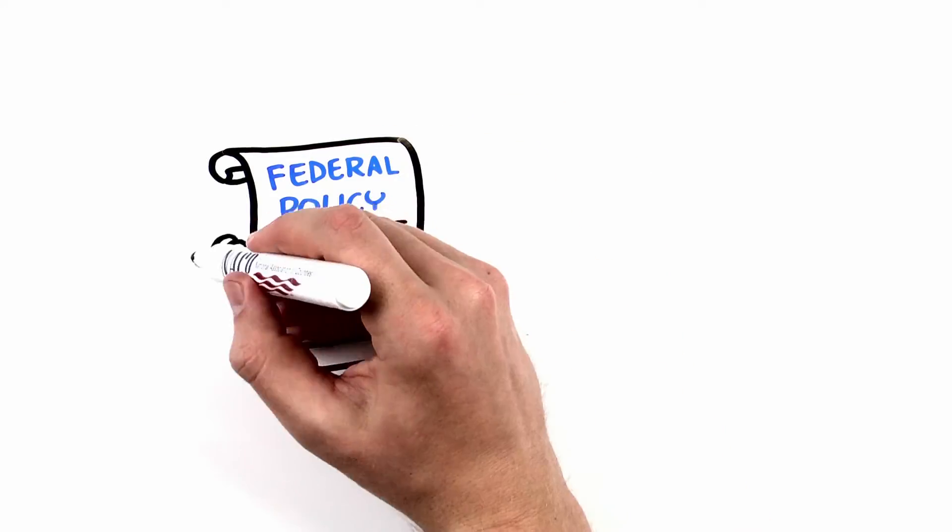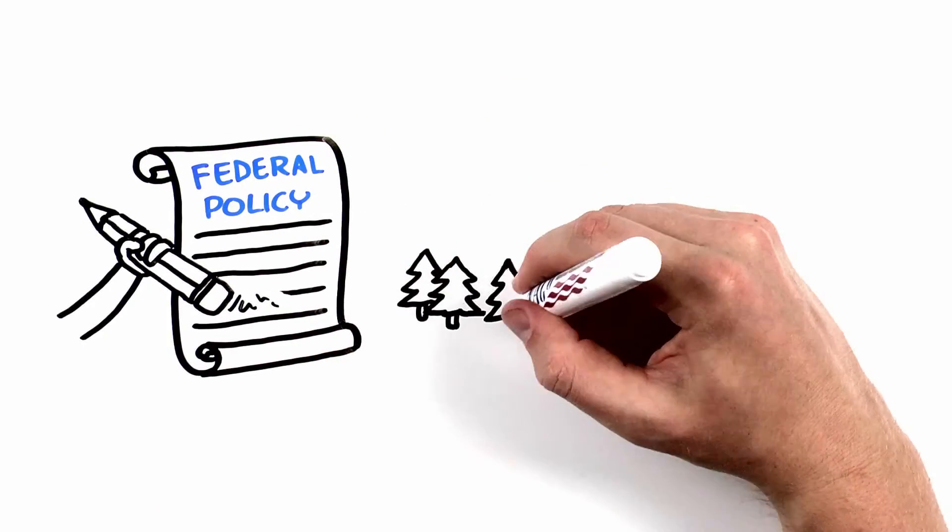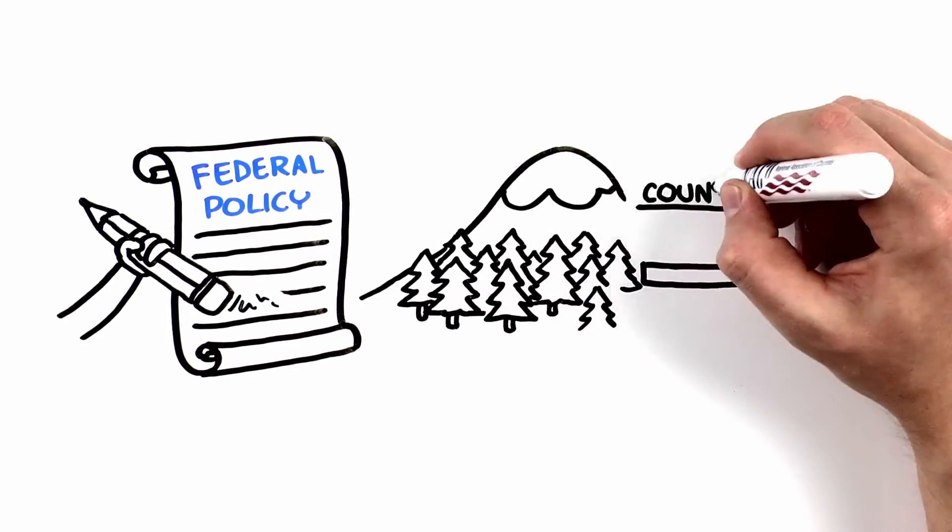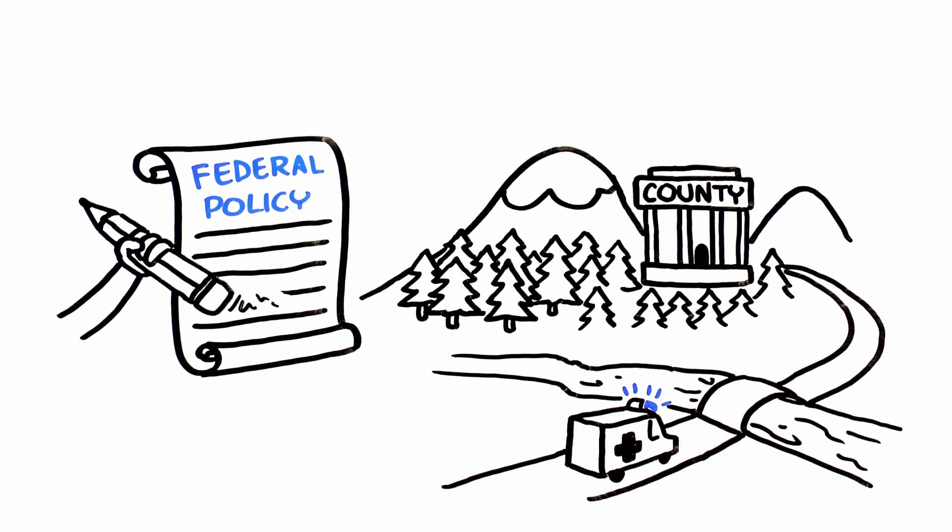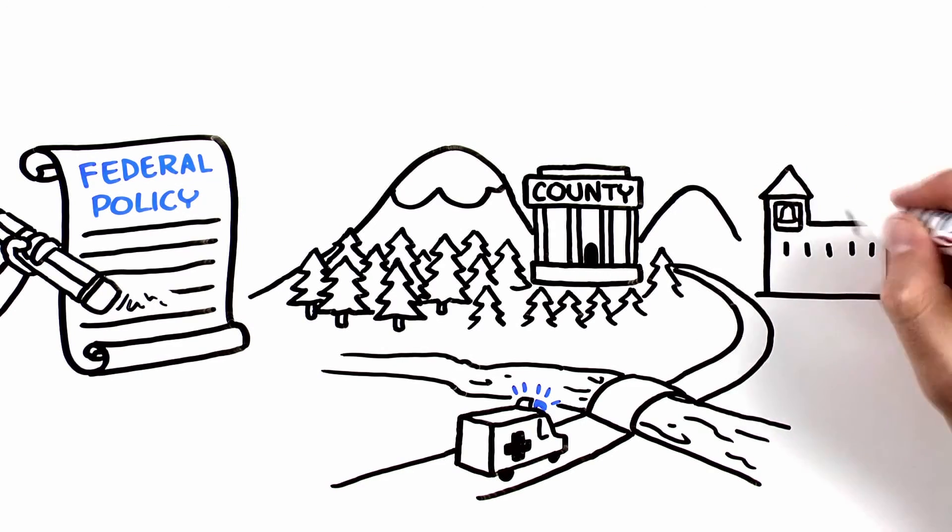Until federal policies are reformed to allow for more active and healthy forest management, forest counties now rely on SRS payments to support roads, schools, and other emergency and essential services.